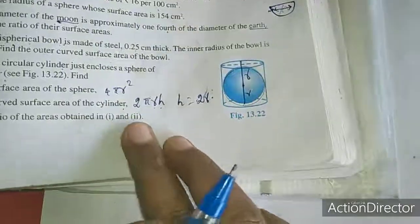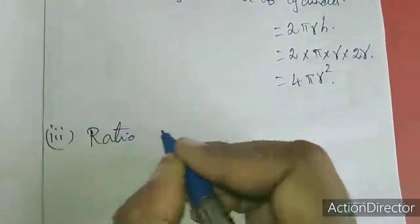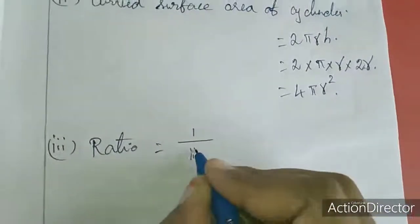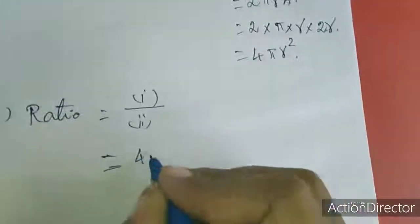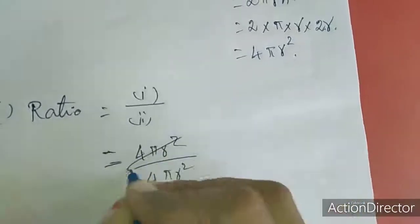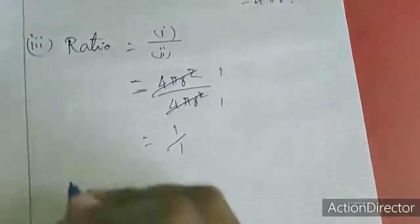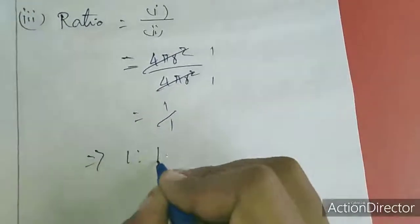Third subdivision: the ratio of areas obtained in parts 1 and 2. Ratio = surface area of sphere / curved surface area of cylinder = 4πr² / 4πr². Everything cancels, giving 1/1. So the ratio is 1:1.